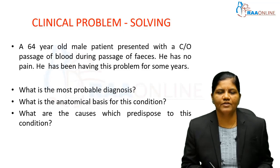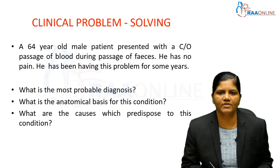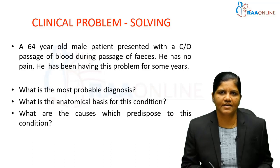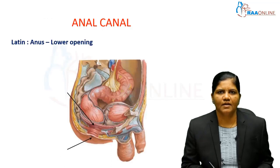Before moving into the topic proper, let's see the clinical problem. A 64-year-old male patient presented with a complaint of passage of blood during the passage of feces. He has no pain and has been having this problem for some years. What is the most probable diagnosis, what is the anatomical basis of this condition, and what are the causes which predispose to this condition? Let's discuss this case again at the end of the discussion.